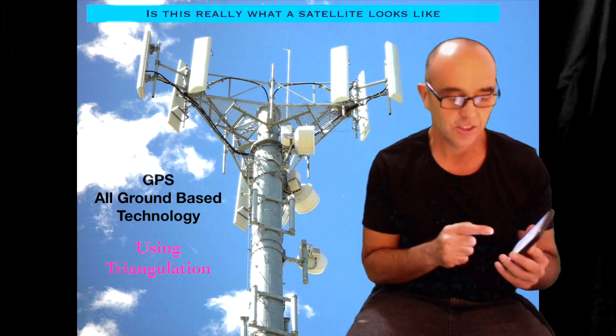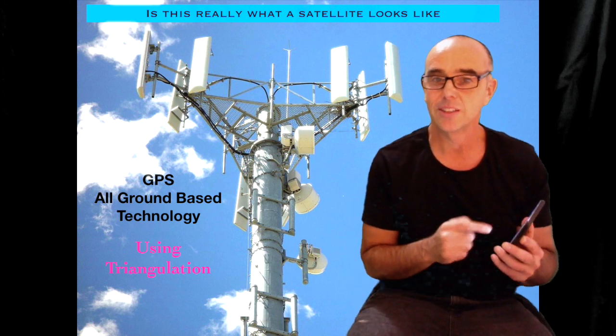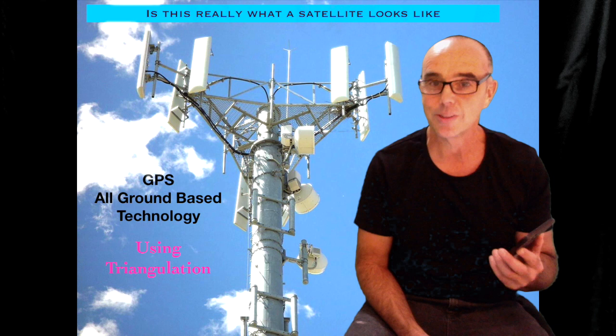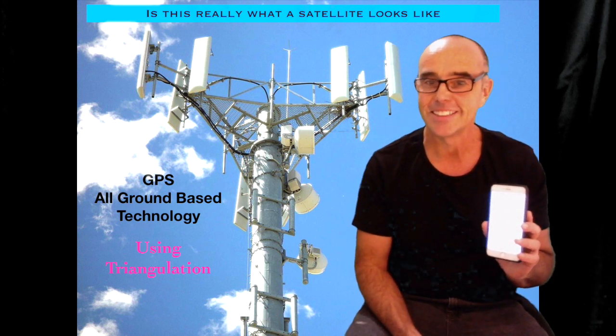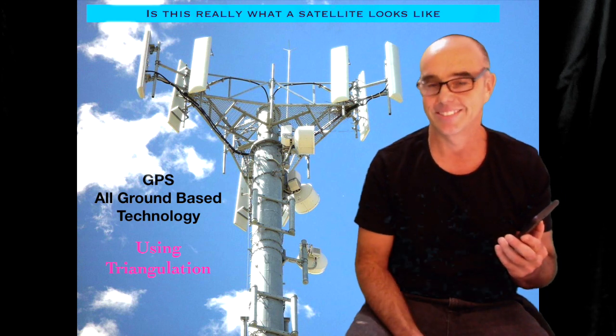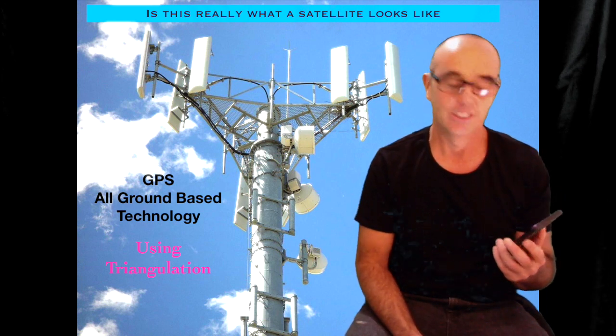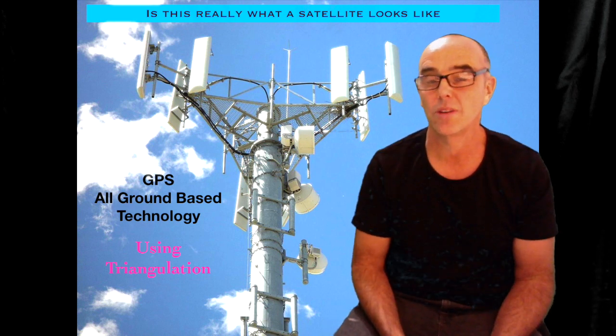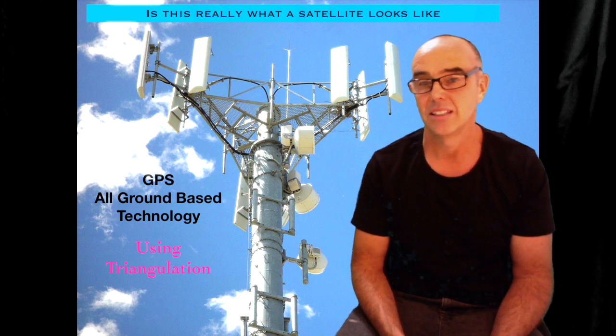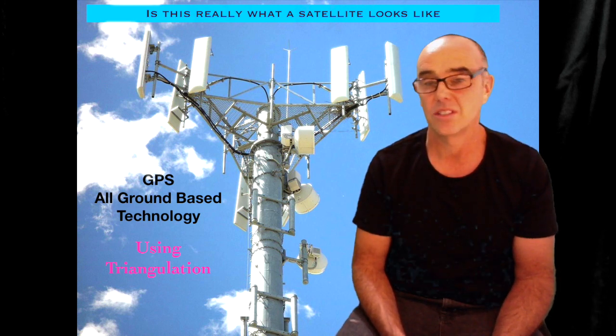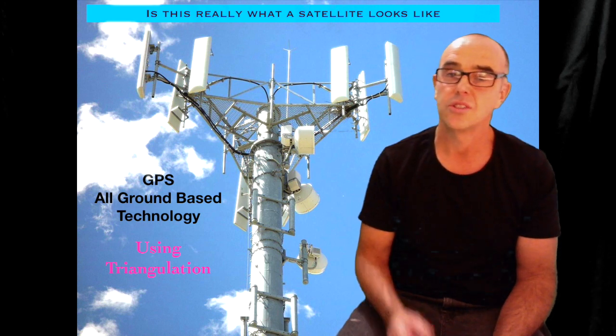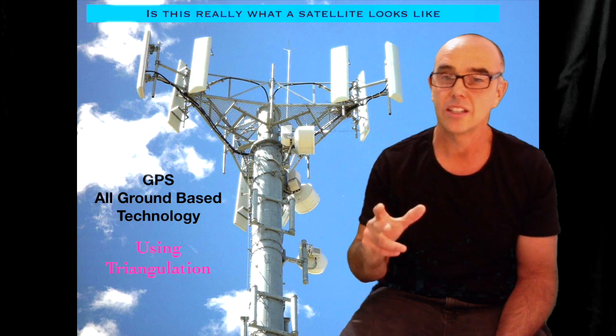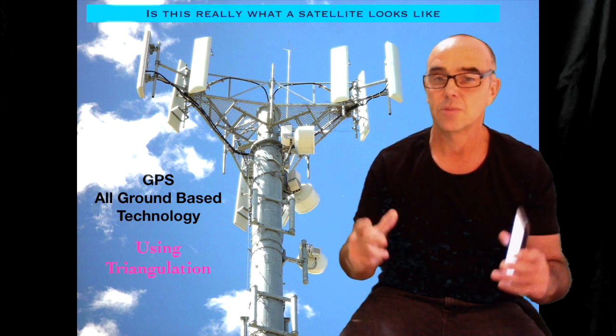Oh my goodness, I just typed in my friend's address and a little blue line appeared on Google Maps showing me the way to go. All those little satellites flying around giving me directions, isn't that cute? Well, the truth is GPS is all ground-based technology. I spent quite a few years working for private companies on cell phone towers, and it's all ground-based technology. It uses three towers using a method called triangulation, and three towers pinpoint your position.